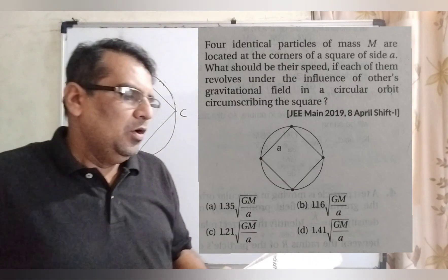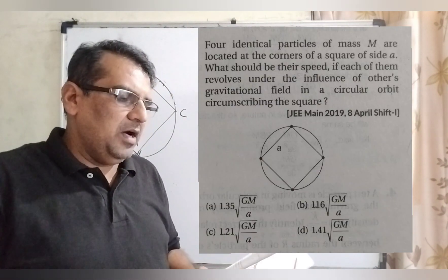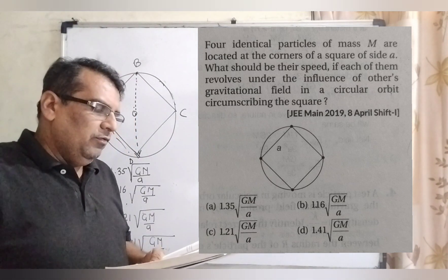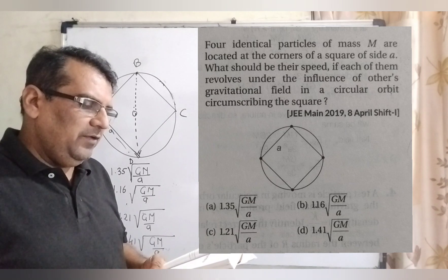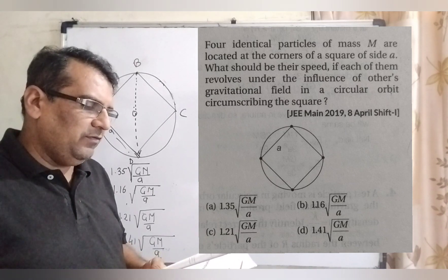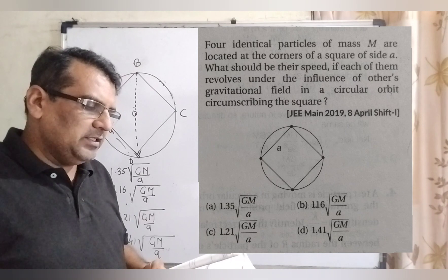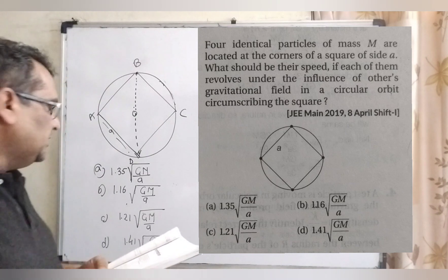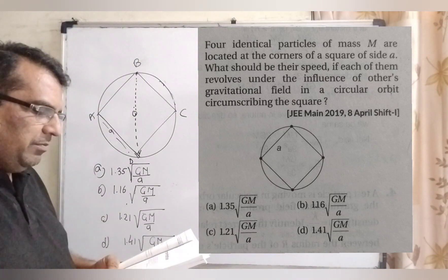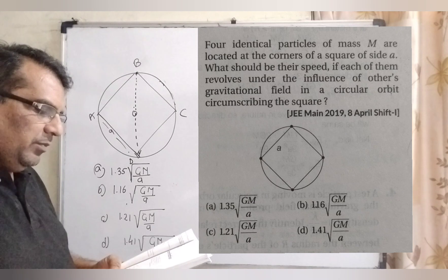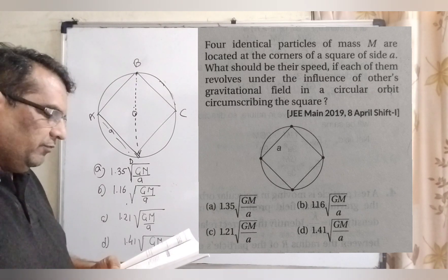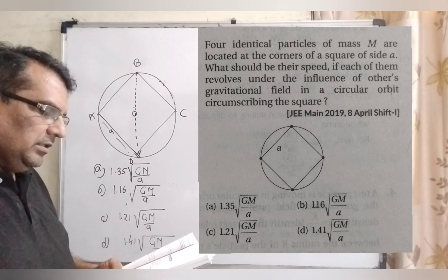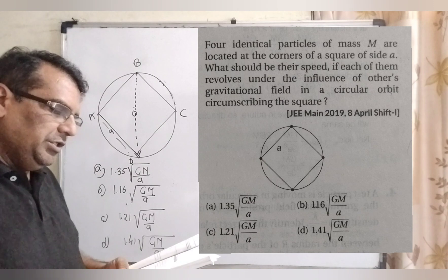What the question says? Four identical particles of mass capital M are located at the corner of a square of side A. What should be their speed if each of them revolves under the influence of other's gravitational field in a circular orbit circumscribing the square? You have given four options. First option A, 1.35 root GM by A. Second option 1.16 root GM by A. Third option 1.21 root GM by A. And last D option is 1.41 root GM by A.